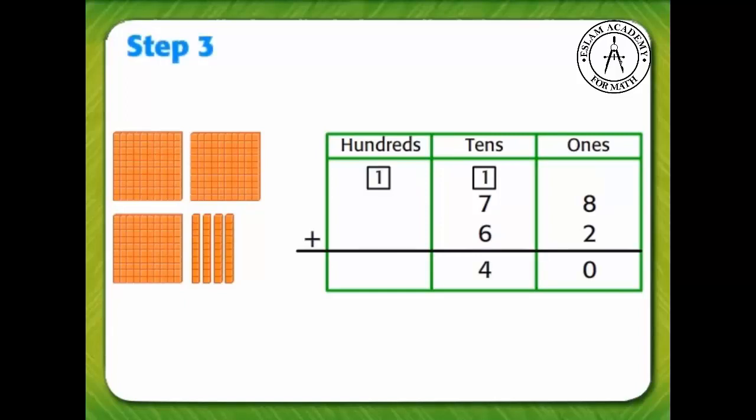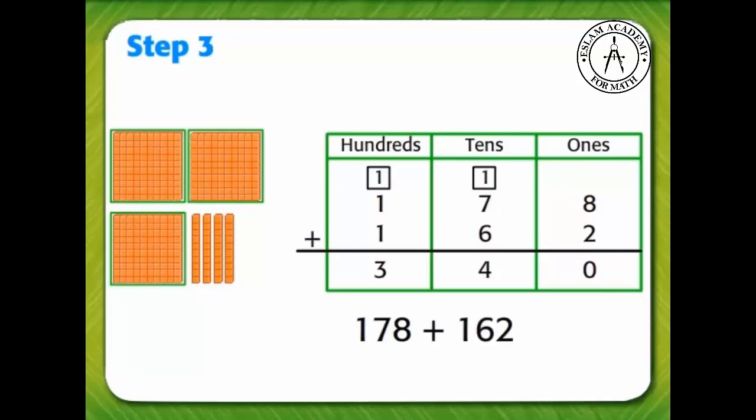Finally, add 1 plus 1 plus 1 in the hundreds. There are 3 hundreds. So, 178 plus 162 equals 340.